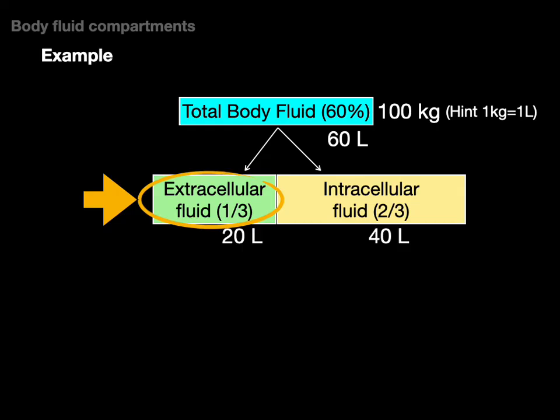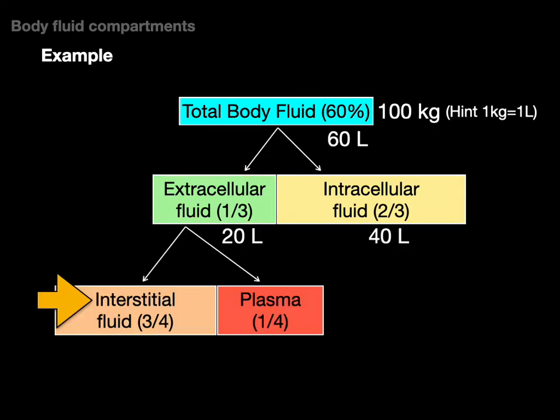Fantastic. But don't forget that extracellular fluid has two compartments, interstitial fluid and plasma. So what is three quarters of 20 liters? That's 15 liters. And what's one quarter of 20 liters? That's five liters. And there's an example of how you could then determine the amount of fluid in each compartment in a patient.